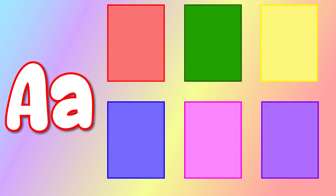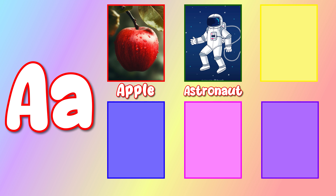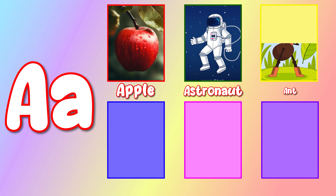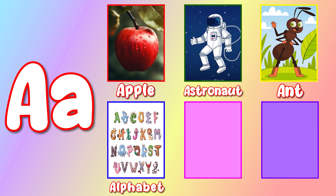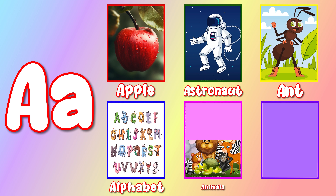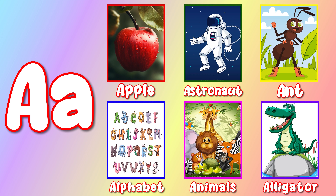A. A is for apple. A is for astronaut. A is for ant. A is for alphabet. A is for animals. A is for alligator.